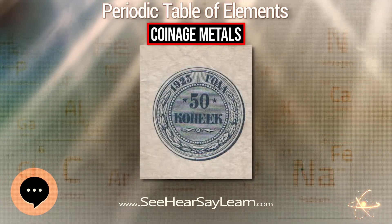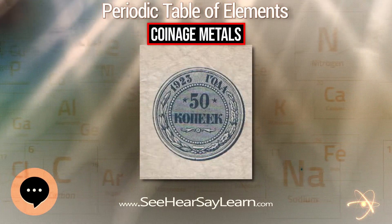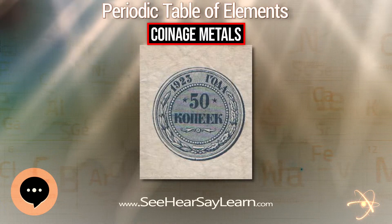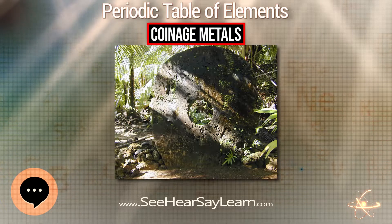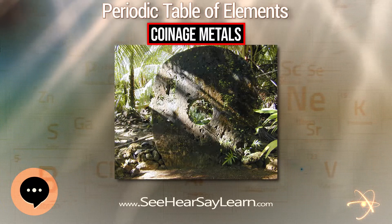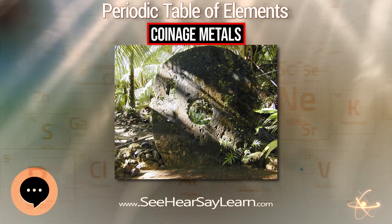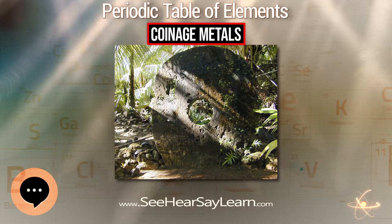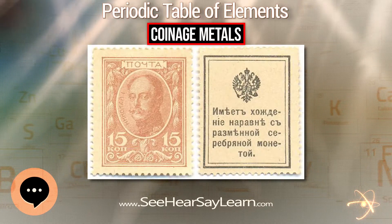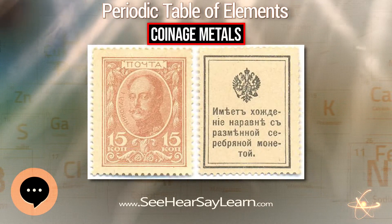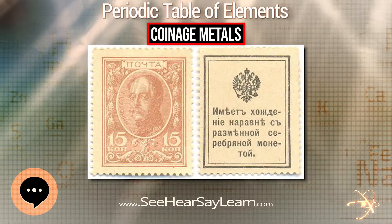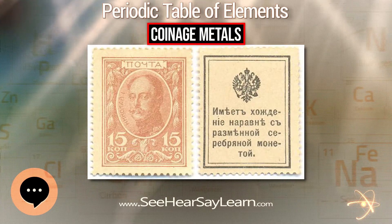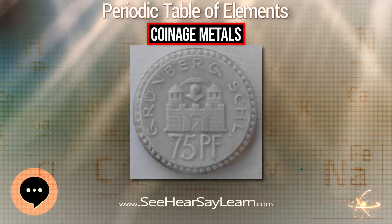Electrum was further alloyed with silver and copper. However, the Persian Daric was the first gold coin, which along with a similar silver coin, the Siglos, represented the bimetallic monetary standard of the Achaemenid Persian Empire.